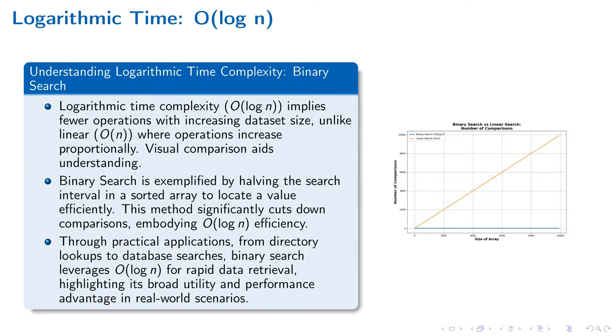Logarithmic time complexity, symbolized as O(log n), highlights a pivotal efficiency shift, notably through binary search. This method halves the search area each time, thereby slashing the operations needed to find an element within a sorted array. Such efficiency is not just theoretical; binary search is integral to improving database query speeds and streamlining directory searching.